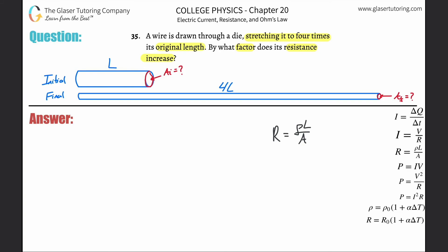So I'll write that the initial volume equals the final volume. The formula for volume of a cylindrical wire is V = πr²h. I'll be specific about initial and final states: the initial volume is π·r_i²·h_i, and the final volume is π·r_f²·h_f, where the subscripts i and f denote initial and final radius and height respectively.